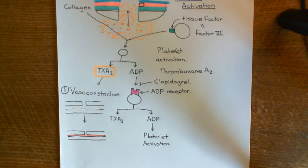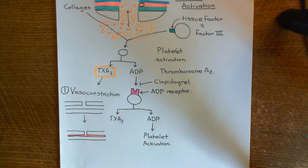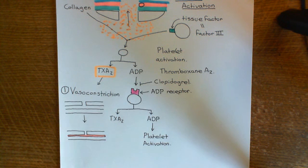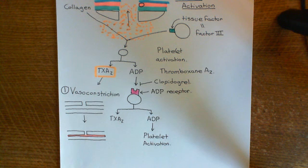You might ask: why on earth would you want to use this drug? It's going to stop the hemostatic response — and yes it is — but we give it to people who are at risk of thrombosis. Thrombosis is when you activate the hemostatic pathway even though there's no hole inside the blood vessel. So you get all of this happening in a blood vessel that's perfectly intact, and that can lead to problems.